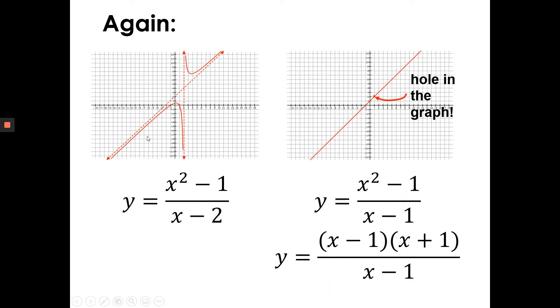All right, so this on the left side, that graph is x squared minus 1 all over x minus 2. Now, the hole in the graph occurs when I change the denominator to x minus 1. Now, if you look at the algebra, you know what? It actually makes sense that I have a hole because the numerator is a difference of squares.